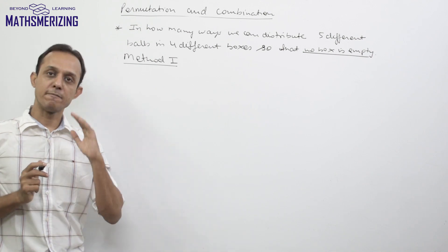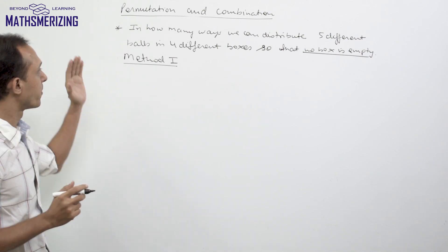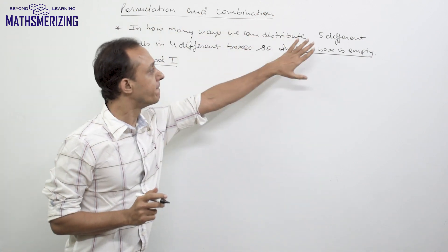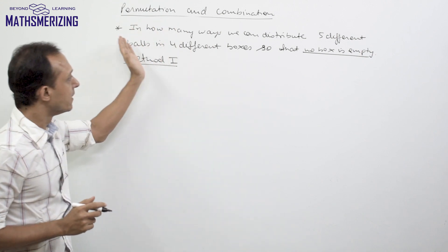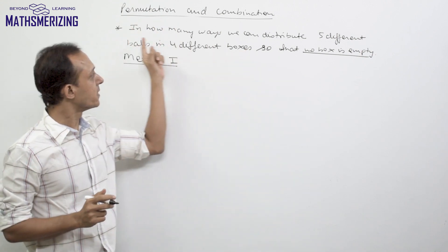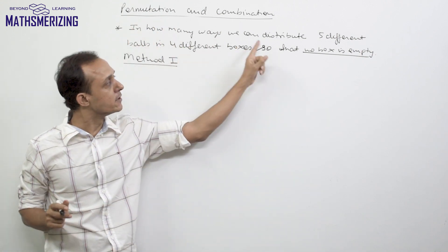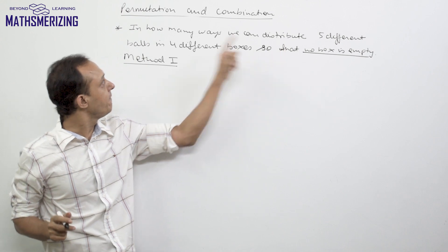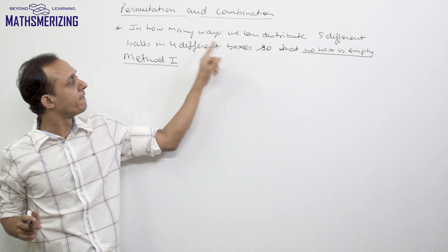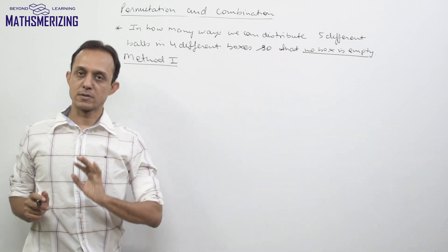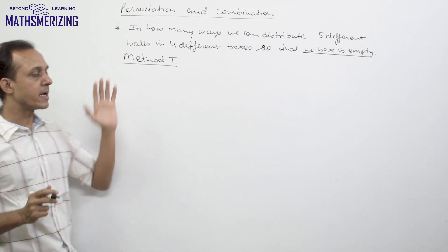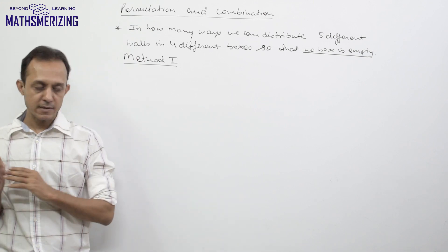In permutations and combinations, we generally come across problems where we need to distribute different objects in different places. For example, suppose we have this question where we need to distribute 5 different balls in 4 different boxes so that no box is empty. This question can be solved in many ways.